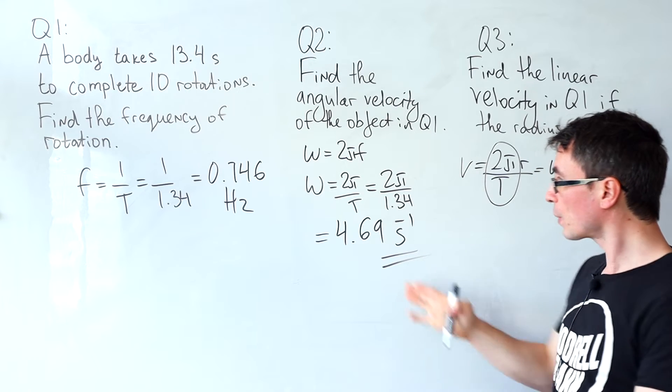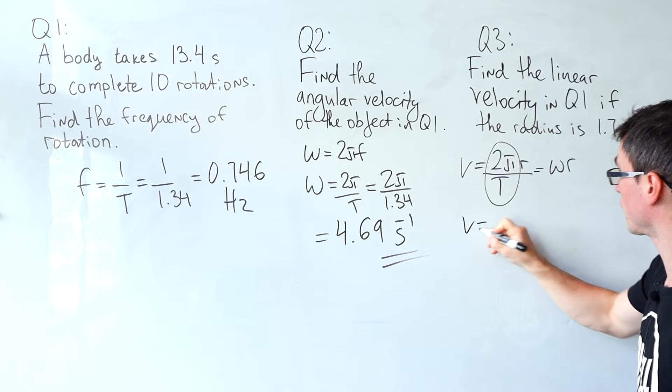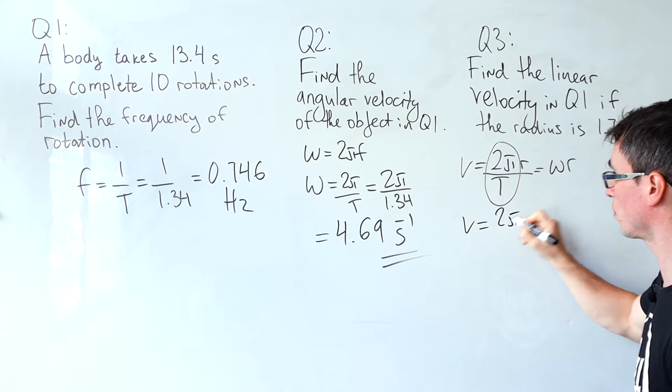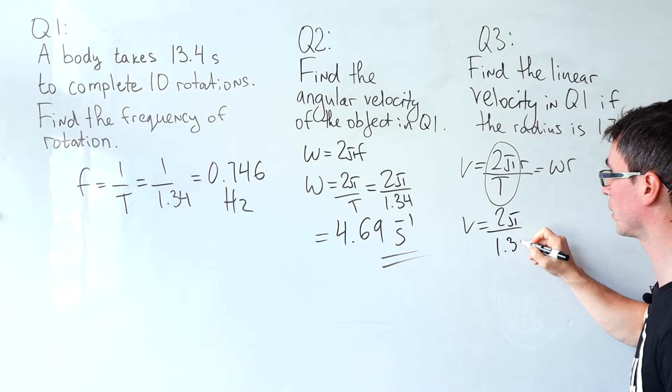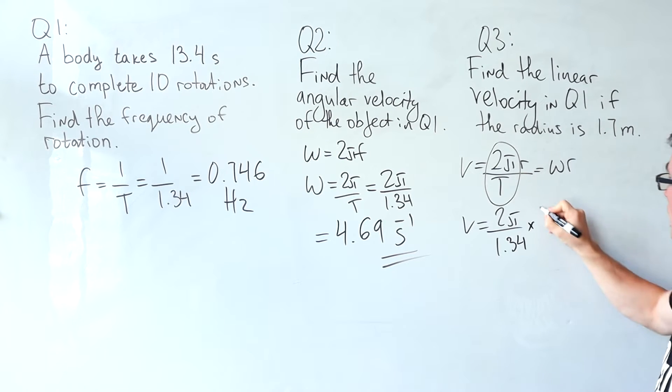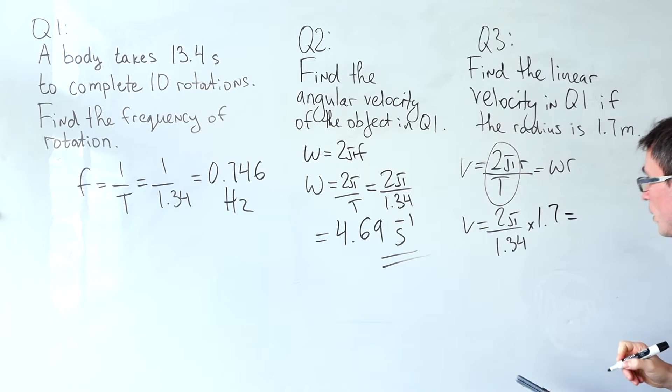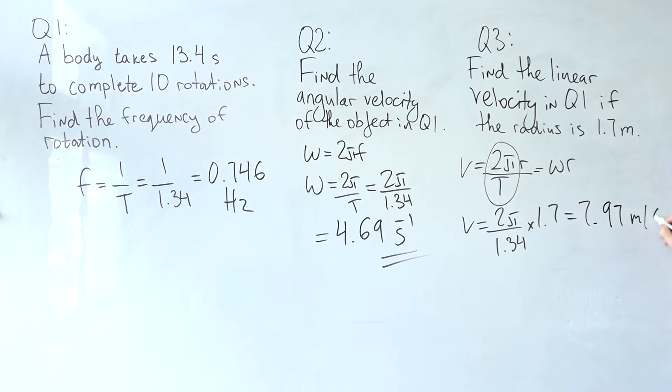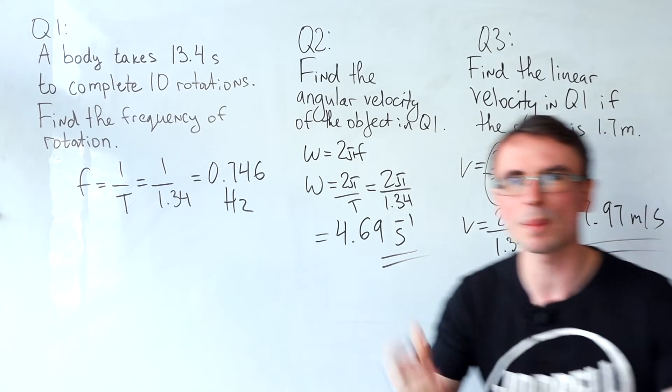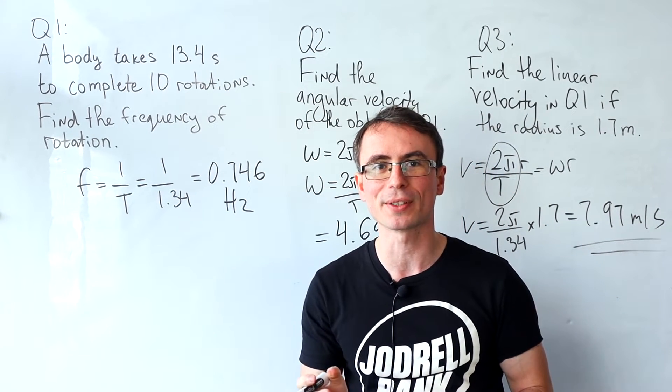We found out omega in the previous part of the question so we can just say that this will be 2π over 1.34 multiplied by the radius which is 1.7 and this gives me around 7.97 meters per second or about 8 up to 2 significant figures.